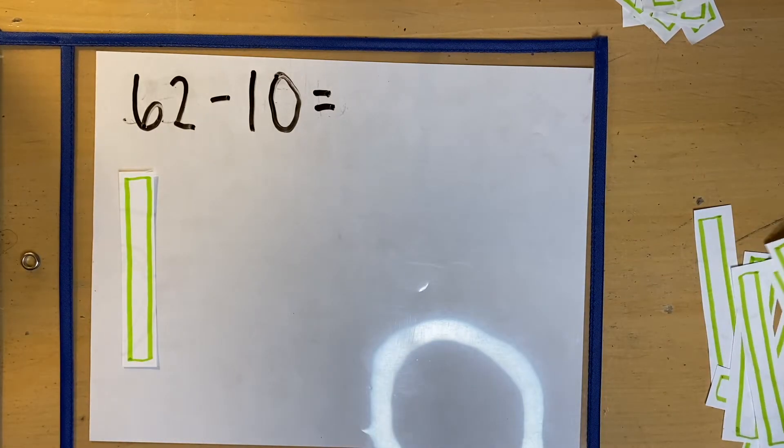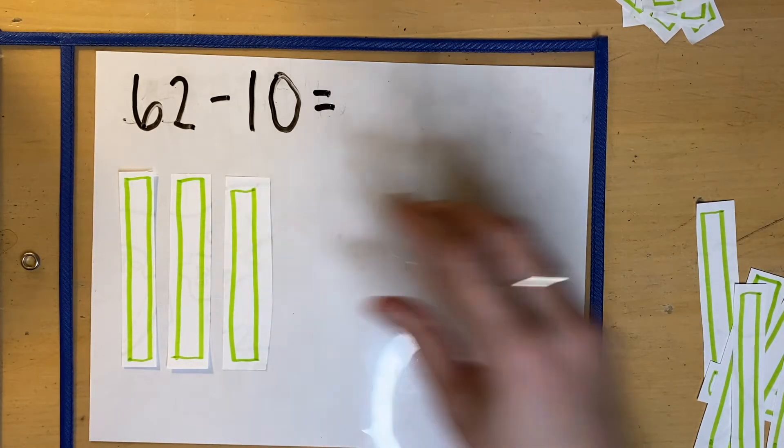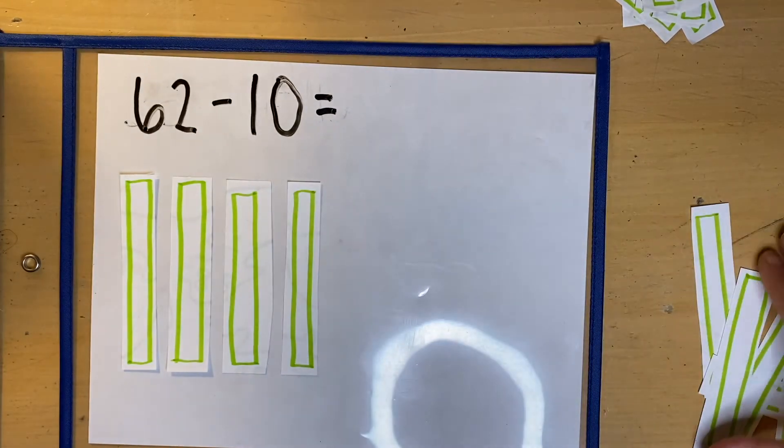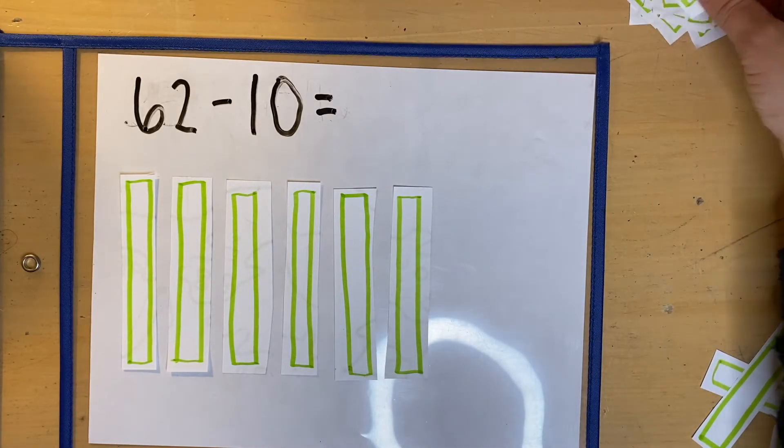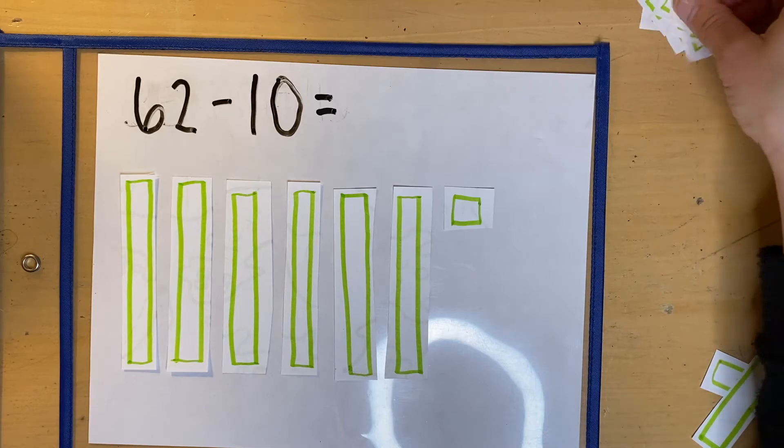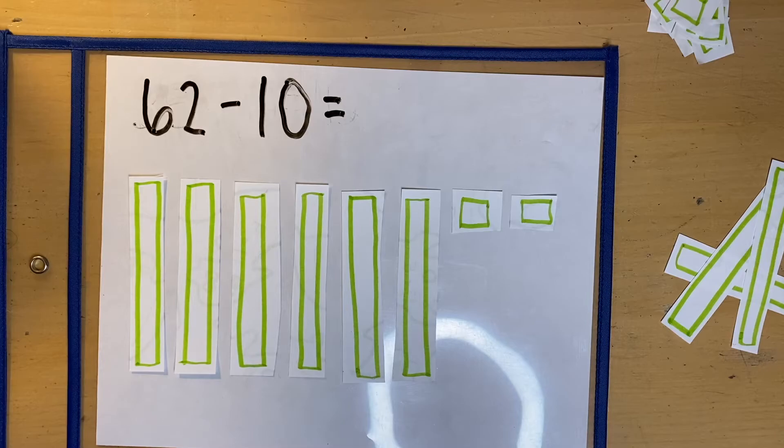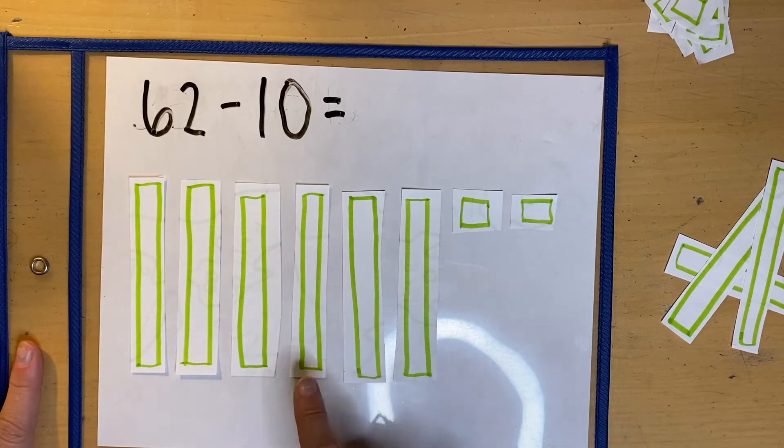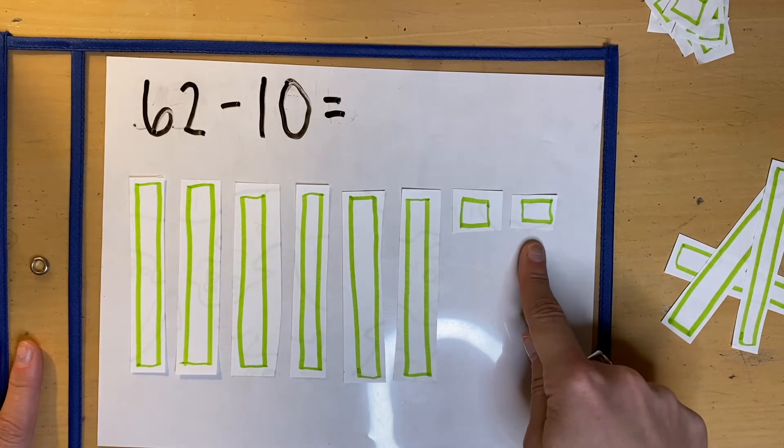10, 20, 30, 40, 50, 60, 61, 62. Okay. Now I want to go back and double check and make sure that I have 62. So I'll count my 10s and then my ones again, 10, 20, 30, 40, 50, 60, 61, 62.